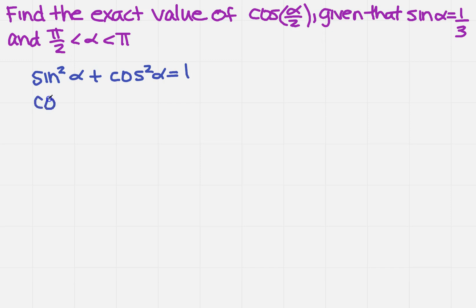So that means I need to get cosine of alpha by itself. So first, I could do 1 minus sine squared alpha. So far, so good. Now, I already know what sine is, right? It's 1 minus 1 third squared, which is going to reduce down to 8 ninths.